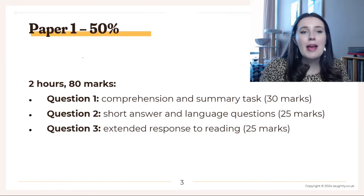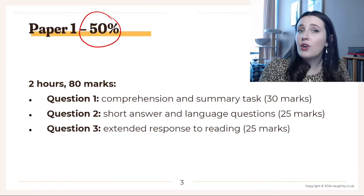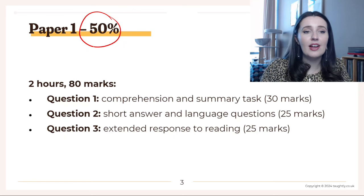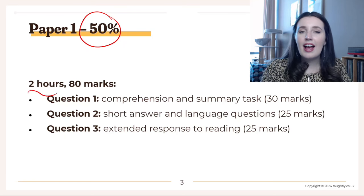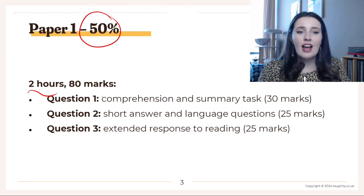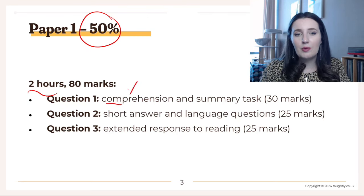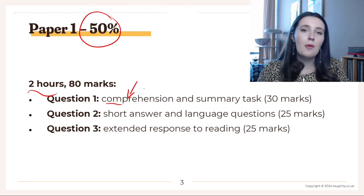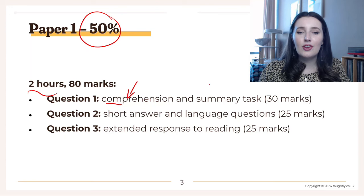This is what your Paper One looks like — it's worth 50% of your overall mark for IGCSE First Language English. You'll have two hours handwritten to answer three big questions. We are focusing on question one today: the comprehension short questions. The next video lesson will be all about summary writing.